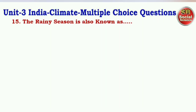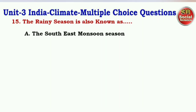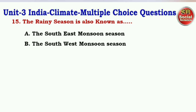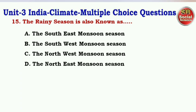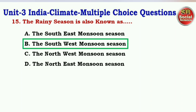Next question: The rainy season is also known as — options are the South East Monsoon Season, the South West Monsoon Season, the North West Monsoon Season, the North East Monsoon Season. The right answer is option B — the South West Monsoon Season.